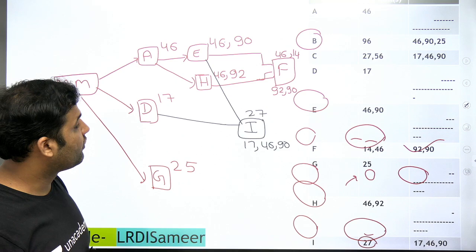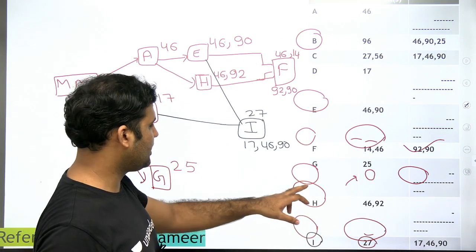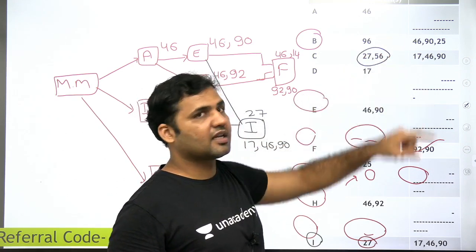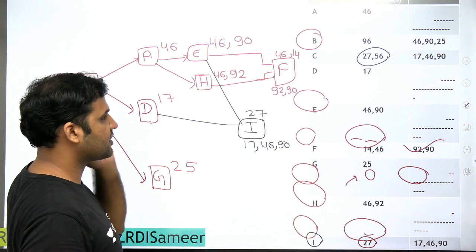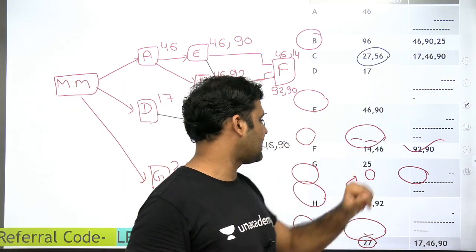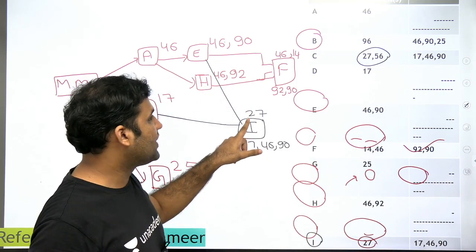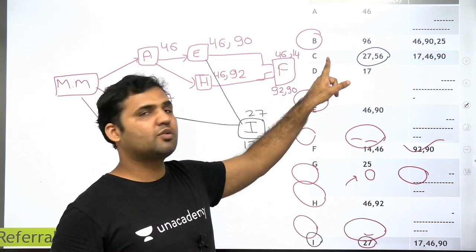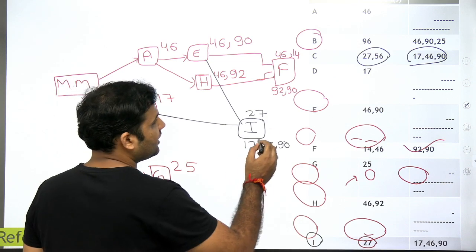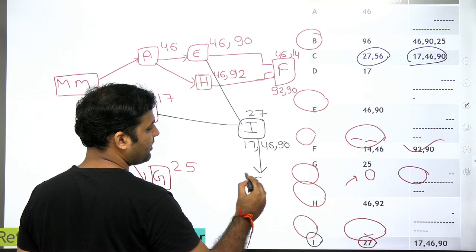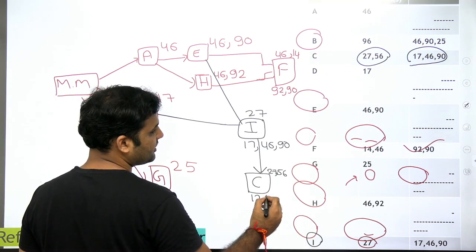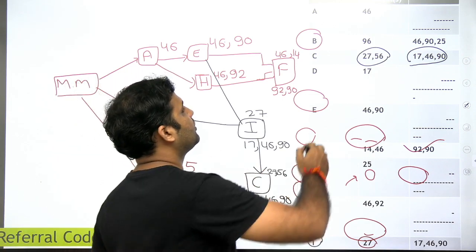So I is also sorted out. Now we are left with only B and C. C has question 27 wrong, and blanks at 17, 46, and 90 — and I also has 17, 46, and 90 blank. That means C must be taking the answer key from I. C took the answer key from I, so question 27 came through as wrong from I, C introduced question 56 as wrong themselves, and 17, 46, and 90 are blank because I also had those blank. So C is also sorted out.